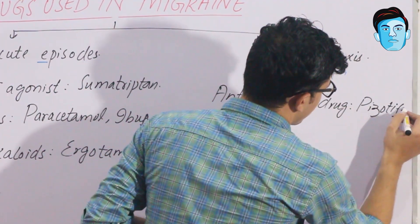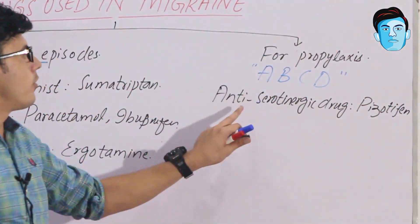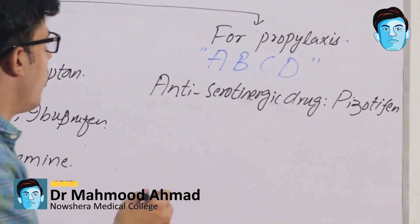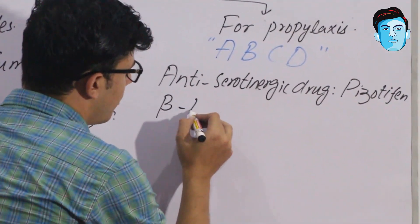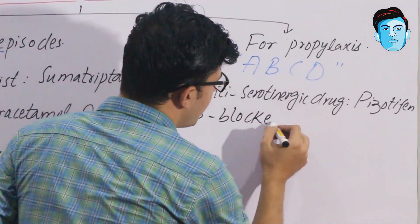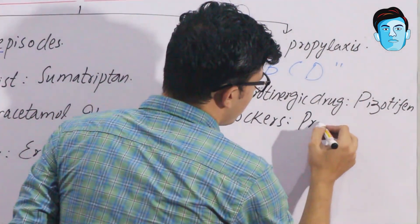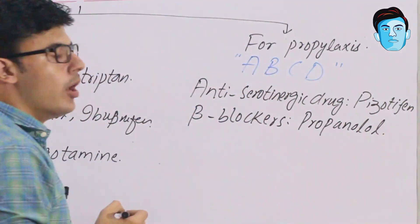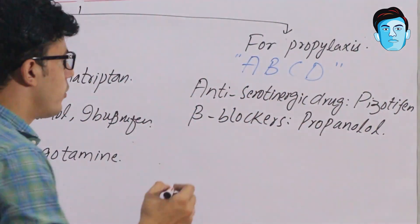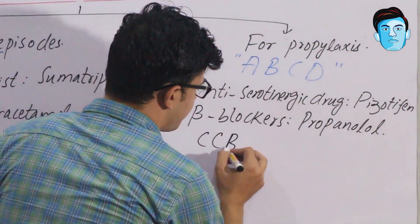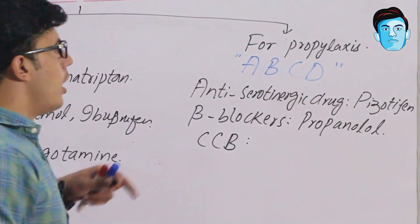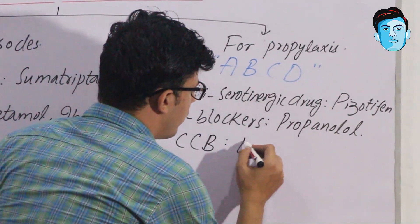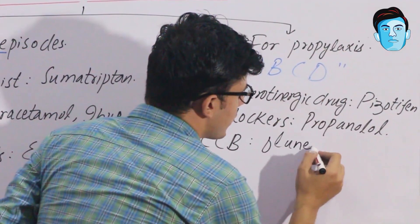Anti-serotonergic drugs include pizotifen. B stands for beta blockers — out of beta blockers, propranolol is preferred for the prophylaxis of migraine. C stands for calcium channel blockers, which contains flunarizine.